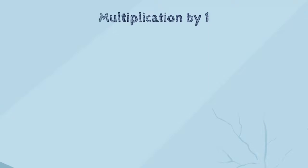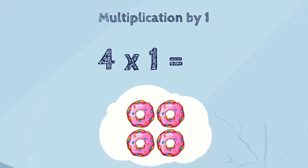For example, let's multiply four by one. First, think about what this means. It means that we will have one group of four items. So how many items do we have in total? Four? Yes, that's true. So, four times one is four.